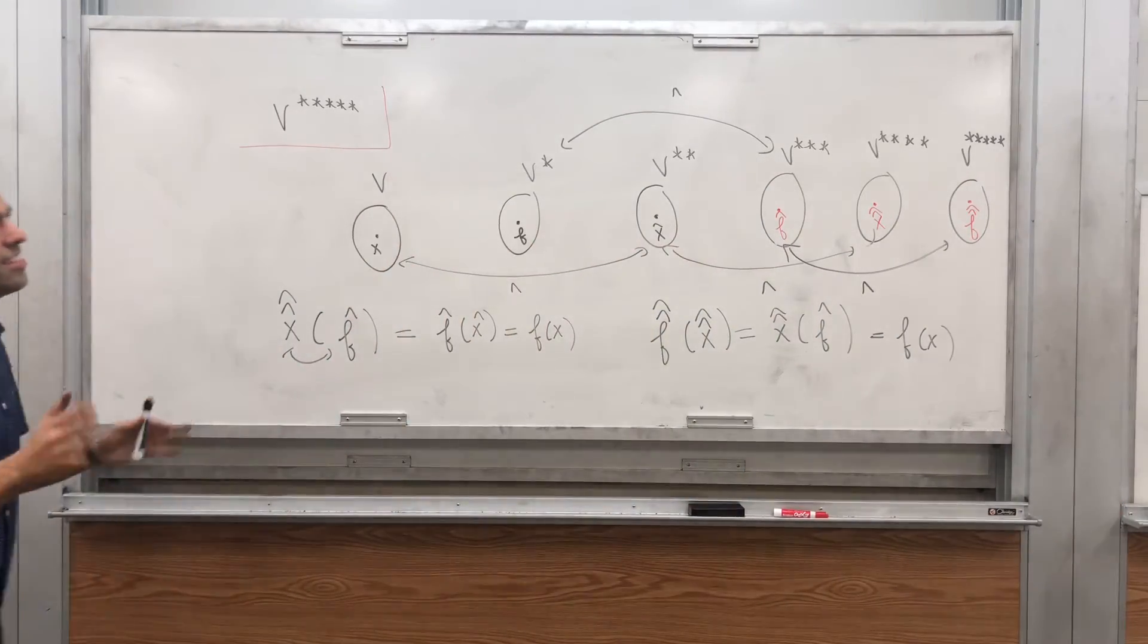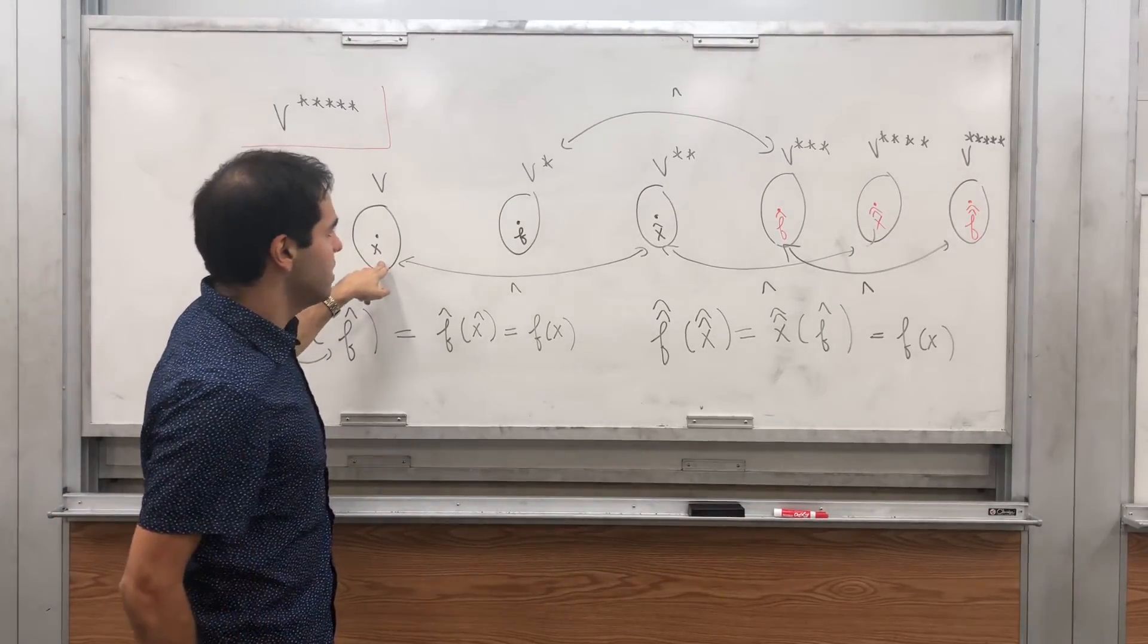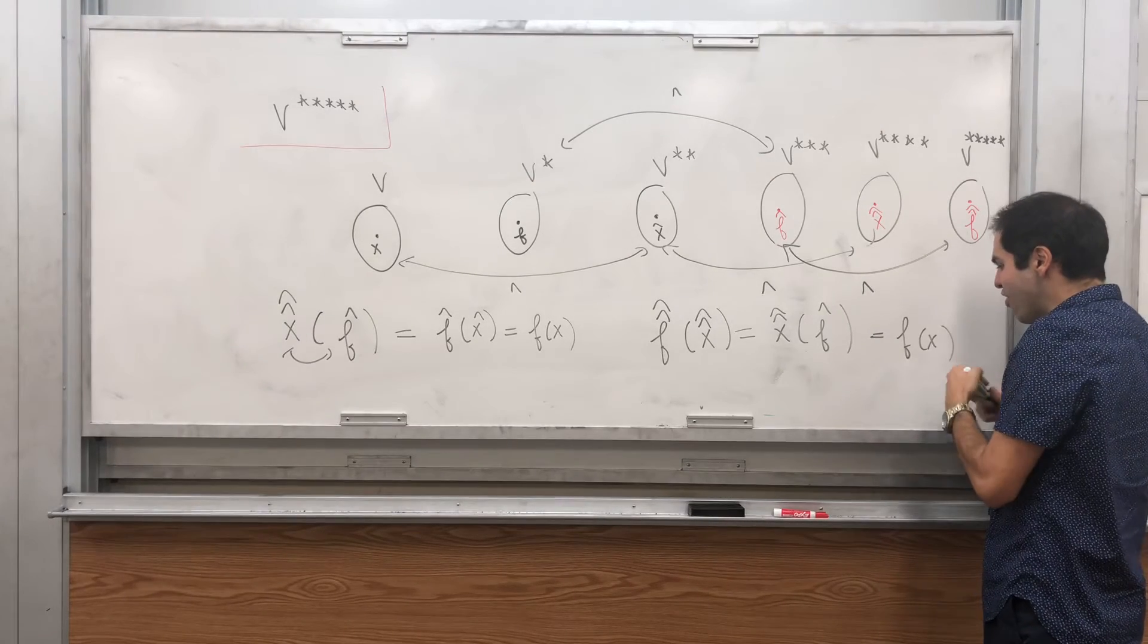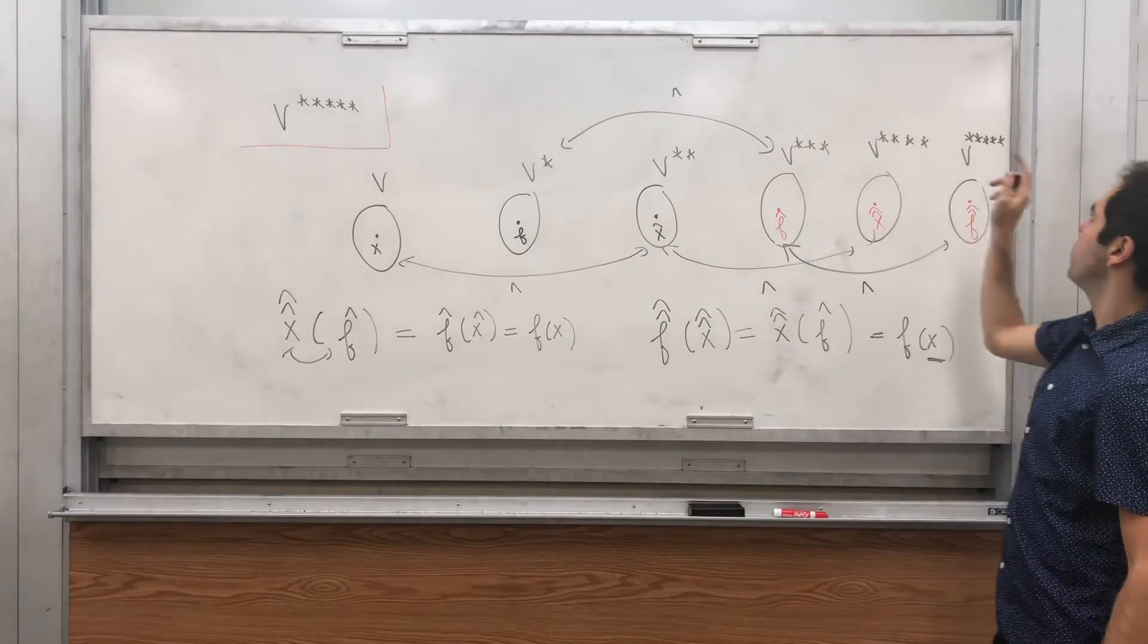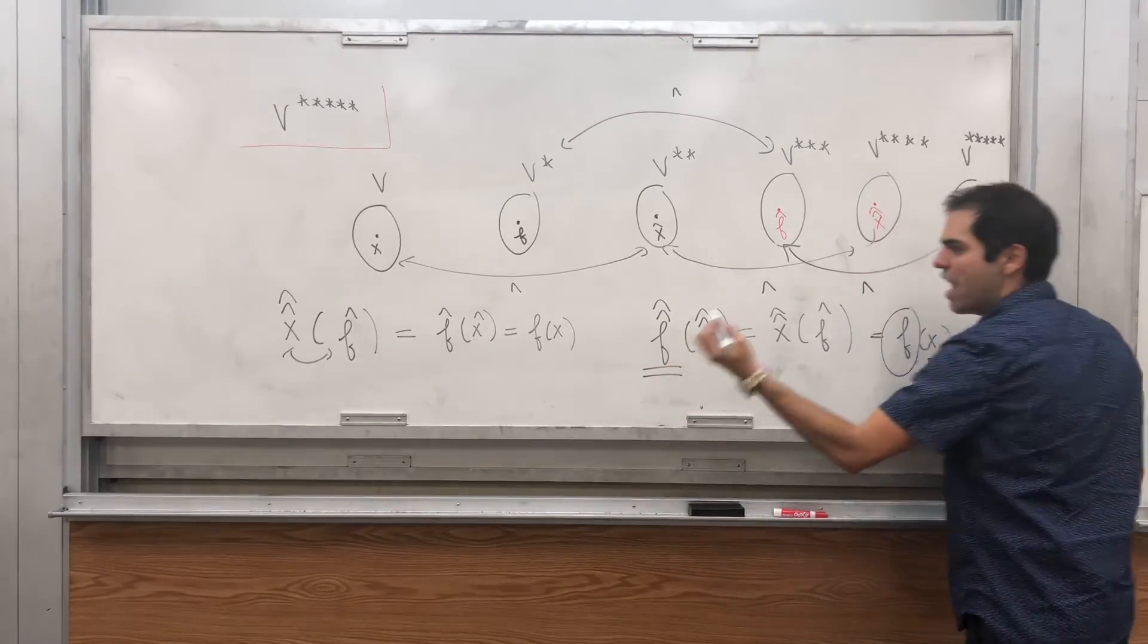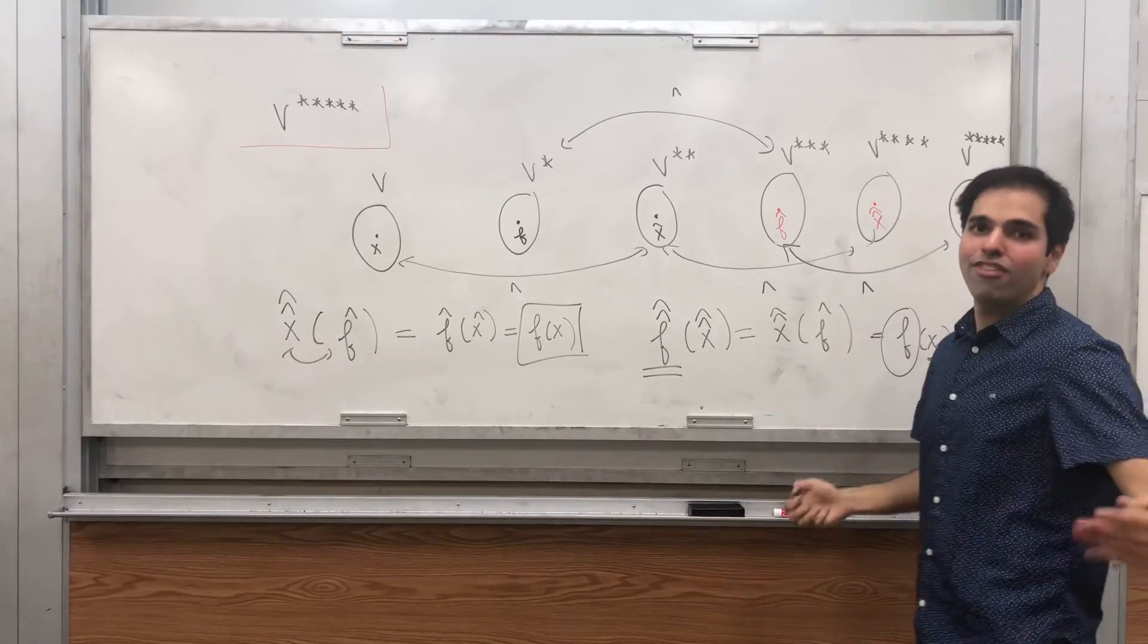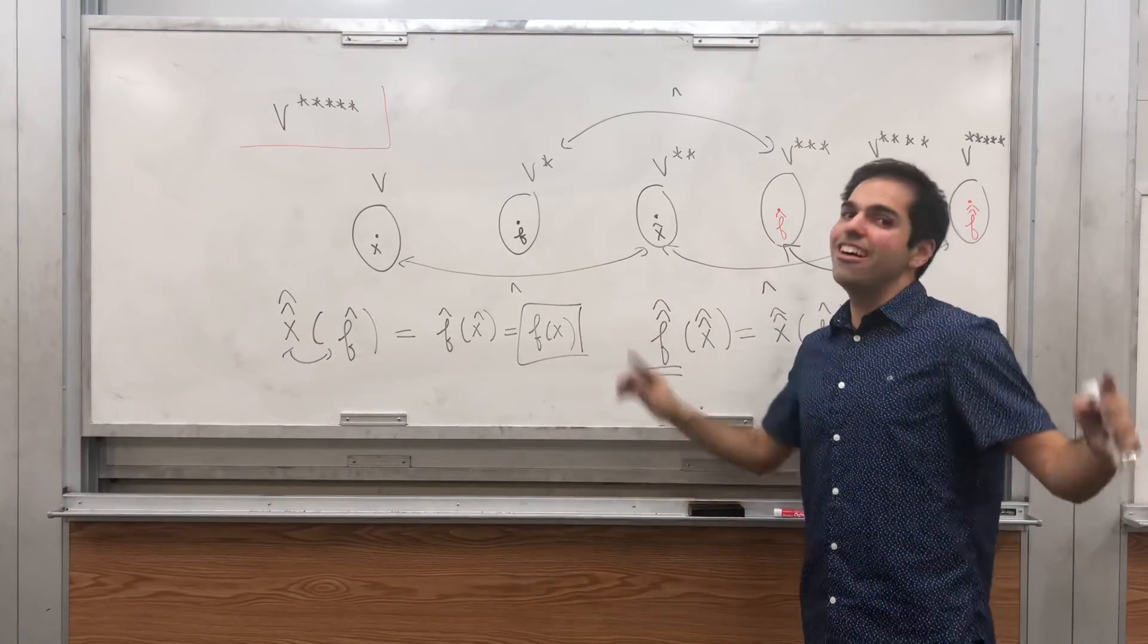What I want to emphasize is that in even stars - so zero stars, two stars, four stars, six stars - you're just focusing on the X's. You're focusing on the X in F of X. But in the odd stars - V star, V triple star, V quintuple star, et cetera - you're focusing on the F's here. Really, dual spaces, it's just the story of F of X. But in even spaces you're focusing on the input F of X, but in the odd spaces you're focusing on the functions F of X, and you have this nice interplay that's going on.